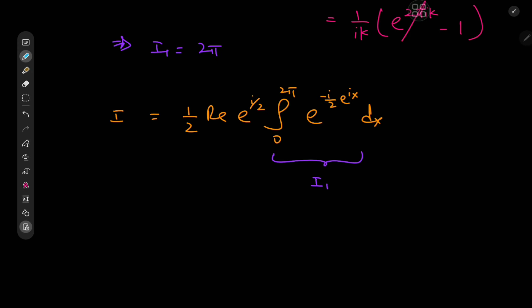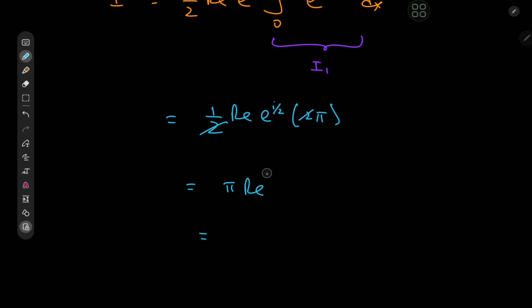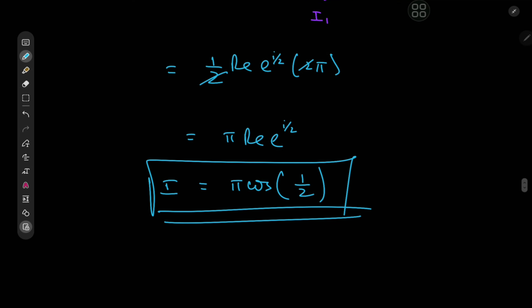So we have one half the real part of e to the i/2 times 2π. The 2's cancel, leaving π times the real part of e to the i/2, which by Euler's beautiful formula equals the cosine of one half. So our answer is π times cosine(1/2) — a very surprising and oddly satisfying result! I hope you enjoyed the video and learned something. Be sure to like, subscribe, and share. Follow me on Instagram and consider supporting me on Patreon. All links are in the description. Thank you, see you next time.